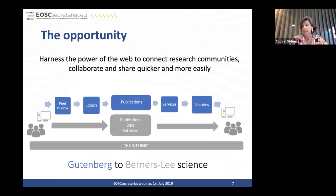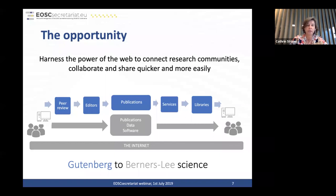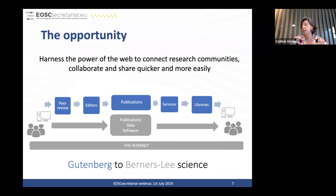The opportunity is that science is global and needs to be supported as best as we can. The way we do science has changed. Scientists used to work with each other via peer reviews, editing, publication, services, and libraries. There used to be the internet, and the EOSC is now to organize the internet in a way that the steps scientists need to work together are found in one easy access.